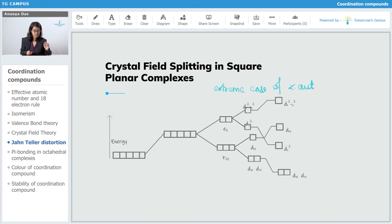So here you can see the Eg and the T2g, they are undergoing the normal splitting. Further, what is happening, the dx²-y² and the dz², they split and the dxy, dyz, dzx, they also split.